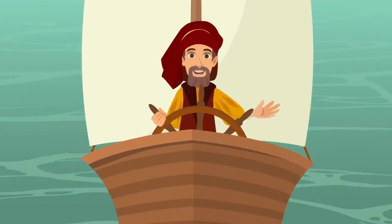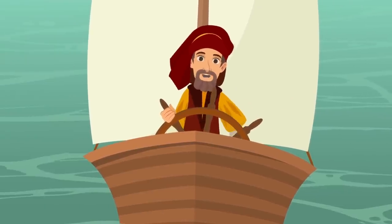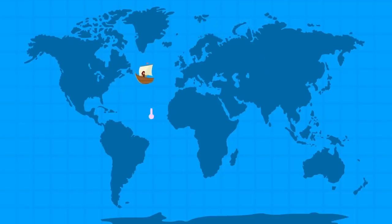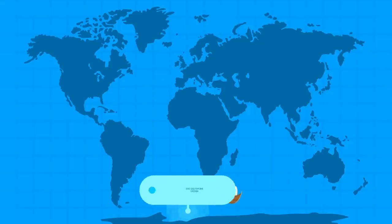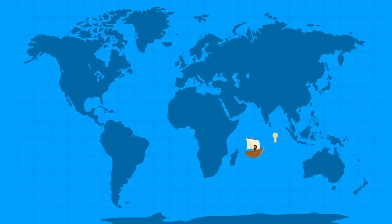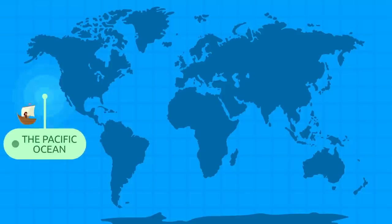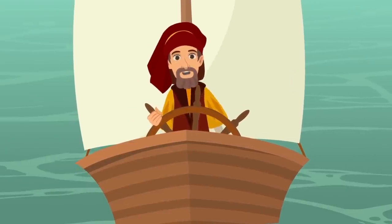From largest to smallest, the five oceans on our planet are: the Pacific Ocean, the Atlantic Ocean, the Indian Ocean, the Southern Ocean, and the Arctic Ocean. Well done, explorers — see you soon for our next trip!